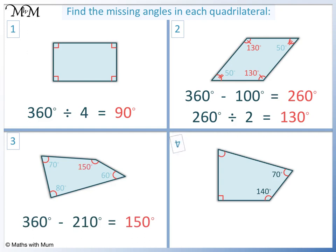Question 4. 70 plus 140 equals 210. Plus 90 equals 300. 360 minus 300 equals 60. The missing angle is 60 degrees.